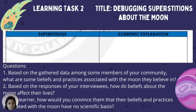Then answer the following questions. Number 1 — Based on the gathered data from members of your community, what are some beliefs and practices associated with the moon? Number 2 — How do beliefs about the moon affect their lives? Number 3 — As a learner, how would you convince them that their beliefs and practices associated with the moon have no scientific basis?